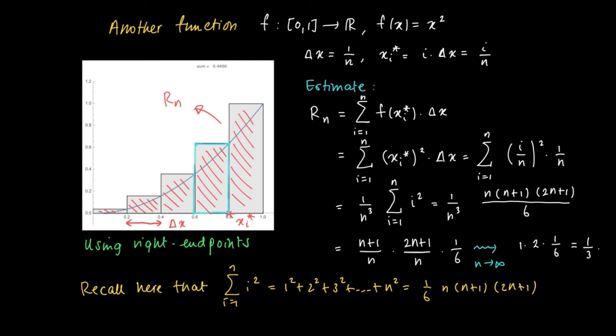If you believe in this formula, which you can actually prove using induction, a proof by induction, then we see that the right endpoint estimates converge to some number. And this number will be called the surface area enclosed by the graph F.